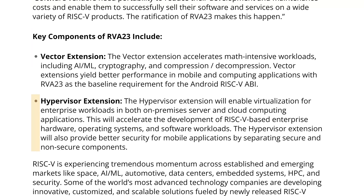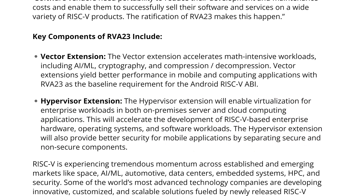The two big things that the RVA23 profile adds — which I think are important — are security in the form of hypervisor support. One of the things that enables a good amount of security these days is simply the ability to abstract away from the metal any code. To do that, you need hypervisors and virtual machines. Enabling hypervisor support through the RVA23 profile allows all the companies in that chain to do that.